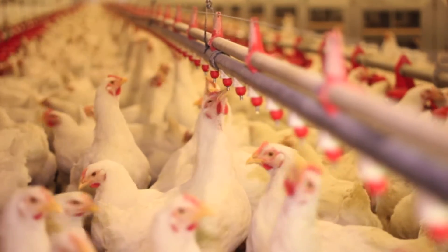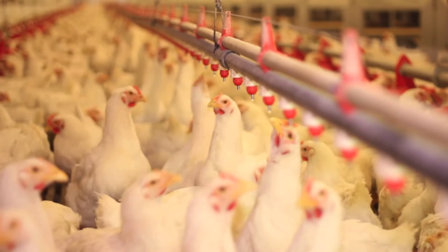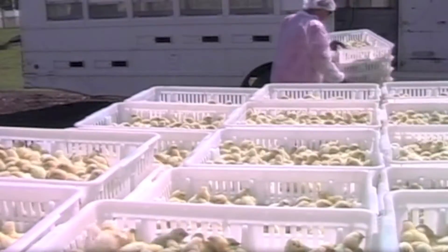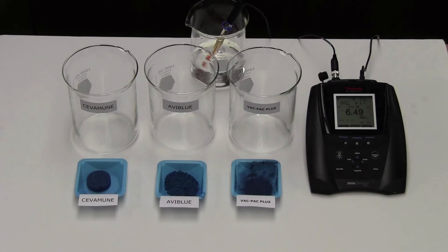Worldwide, many poultry vaccines are delivered through the bird's water supply. These vaccines can only provide full immunity when they're delivered in an ideal environment. In this demonstration, we'll examine the solubility properties of the three leading vaccine stabilizers and how those properties affect the pH of vaccine solutions.